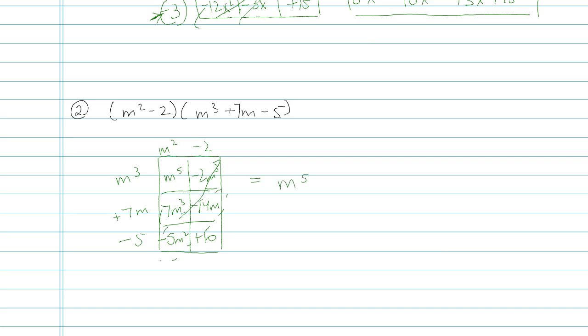I have only one m⁵. I have no m⁴ terms. I have 5 of the m³ terms. I have negative 5m² minus 14m plus 10. The key there is making sure that all of my exponents, all of my like terms got combined appropriately.